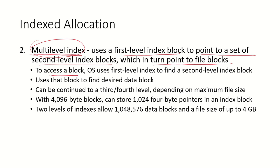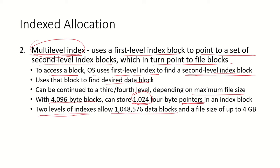To access a block, the OS first uses the first-level index to find the second-level index block, and then uses the second-level index block to find the desired data block. This can extend further to third-level index blocks and so on, depending on file size. For example, with 4096-byte blocks each storing 1024 pointers (assuming 4 bytes per pointer), two levels of indexing allow enough data blocks to support a file size of up to 4 gigabytes.